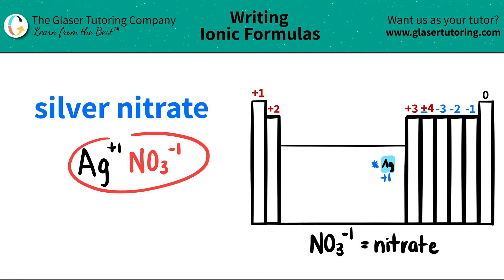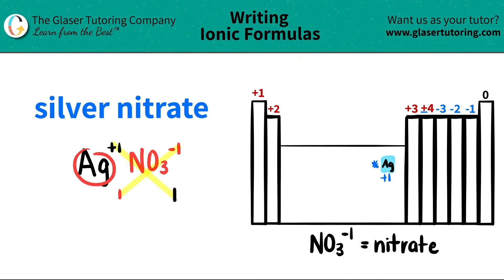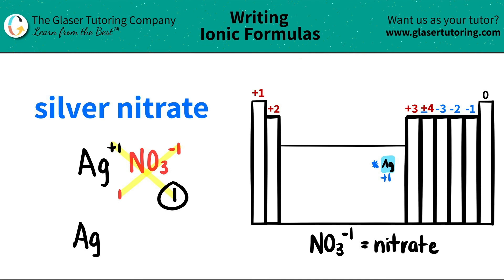Now since we have both components, all we do is this little trick where we crisscross the charges down to say how many of each we have. This one crisscrosses down telling me that I only need one nitrate, and then the negative one crisscrosses down telling me that I only need one silver. When you do your crisscrossing, don't worry about the positive or negative charges — we're just looking at the subscripts at the bottom. So I have silver, Ag, and I only have one, so I don't have to write that subscript. And since I only have one nitrate, I can just say NO3 — I don't need parentheses or anything like that.